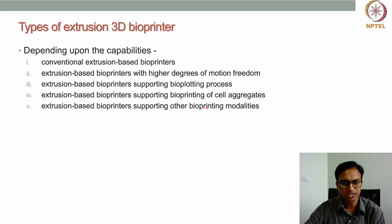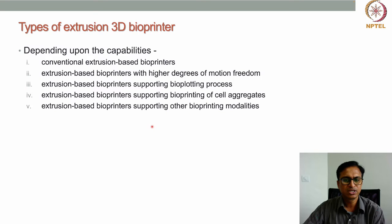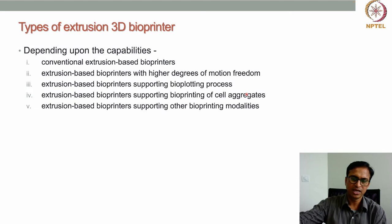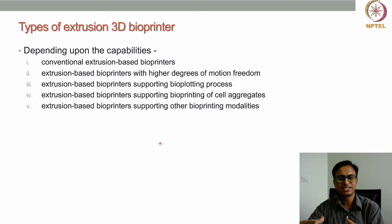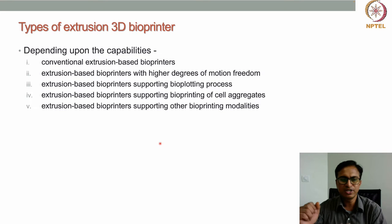Certain types of extrusion-based bioprinters support bio-plotting processes, where materials can be plotted as per design. Some bioprinters support printing of cell aggregates — they can pick up cell aggregates and place them at pre-designed locations. Other bioprinters are hybrid systems, combining extrusion-based bioprinting with other bioprinting modalities, so different capabilities can be used together. Many different capabilities are possible nowadays.